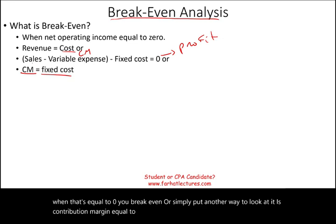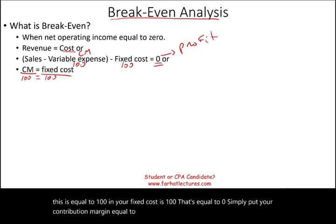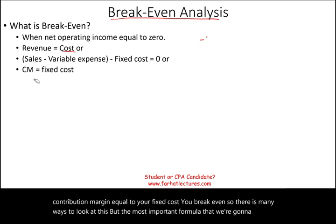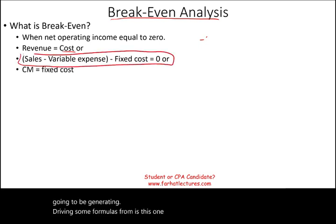For example, if sales minus variable expenses equals $100 and your fixed cost is $100, that equals zero. Your contribution margin equals your fixed cost — you break even. The most important formula we're going to be deriving some shortcuts from is the contribution margin income statement.